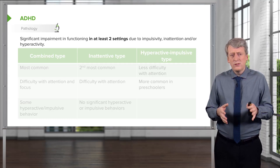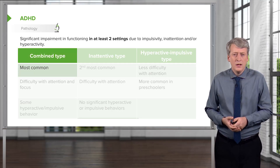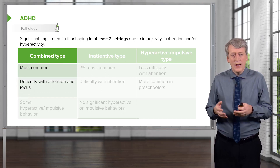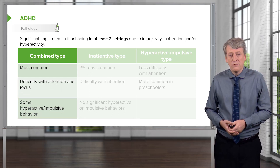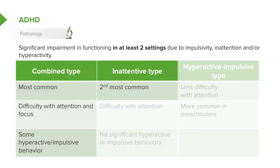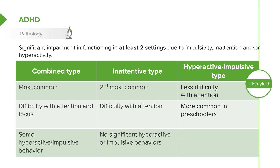There are three major types of ADHD. The combined type is the most common — patients have difficulty with attention and focus and have some hyperactive or impulsive behavior. The inattentive type is the second most common, where there is difficulty with attention but no significant hyperactive or impulsive behaviors. The hyperactive-impulsive type is less common and is more common in preschoolers, where the hyperactive component predominates.